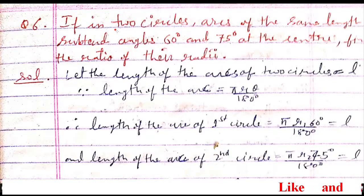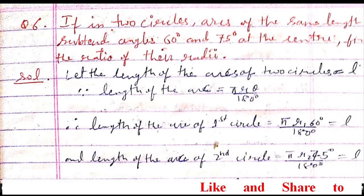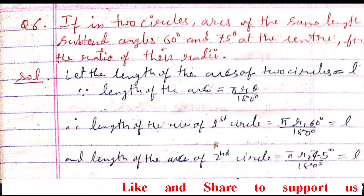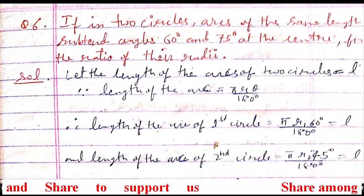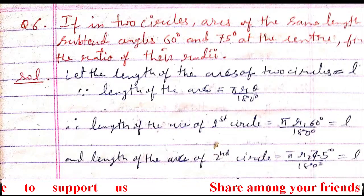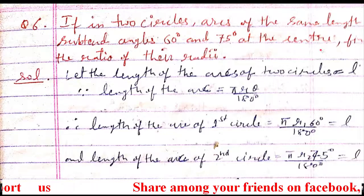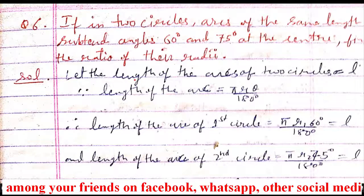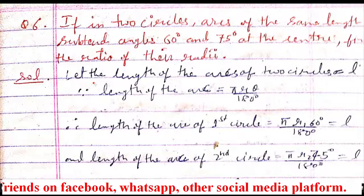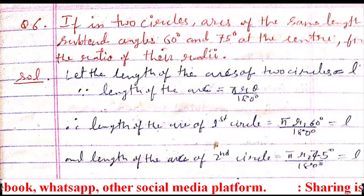Hello everyone, I am going to explain question number 6 from exercise 3.1 from class 11. The question is: if in two circles arcs of the same length subtend angles 60° and 75° at the center, then find the ratio of their radii. We have to find out the ratio of the radius.